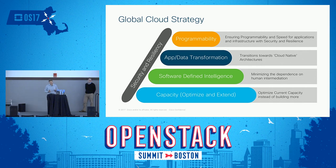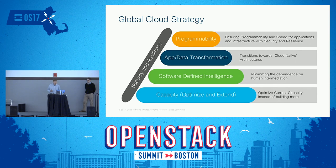The first and most important trait is we're really focused on programmability now. We want automation, self-service, and speed of deployment — for our infrastructure and our applications. We're moving towards cloud-native architectures as a big drive to get those applications developed using those traits. With that, we get the benefit of software-defined intelligence, so we can really take humans out of the loop. We want to get away from IT being a bottleneck.